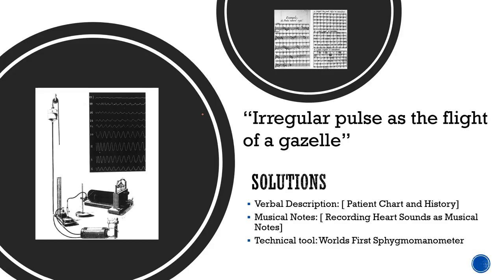The three main solutions to solve those early problems were: first, verbal description — doctors started using verbal descriptions such as 'irregular pulse as a flight of a gazelle,' so other physicians could imagine what kind of ailment it corresponded to. Patient charts and history also helped improve biosignal registration. Second, musical notes were used to record heart sounds — this is one of the earliest ways of recording biosignals.